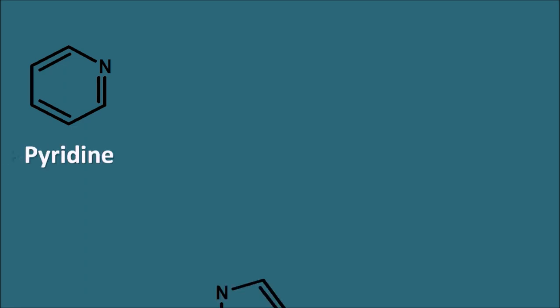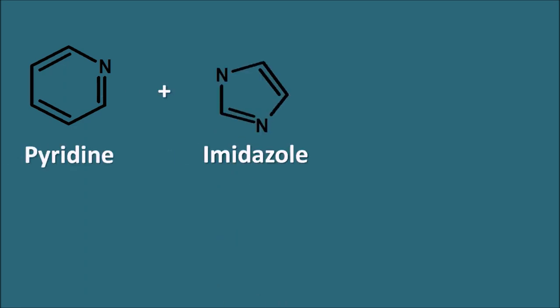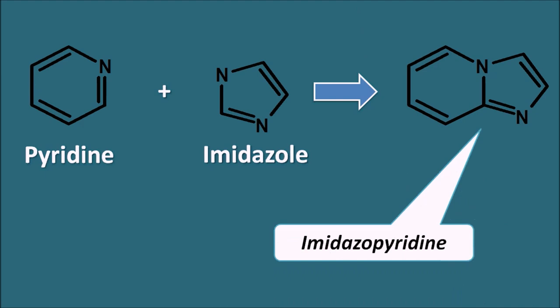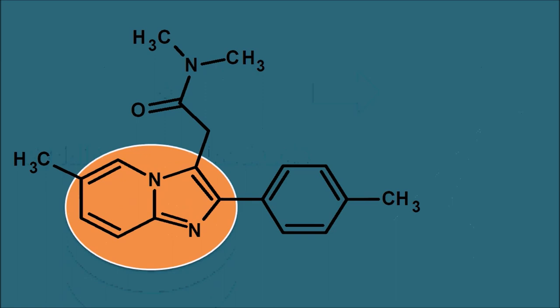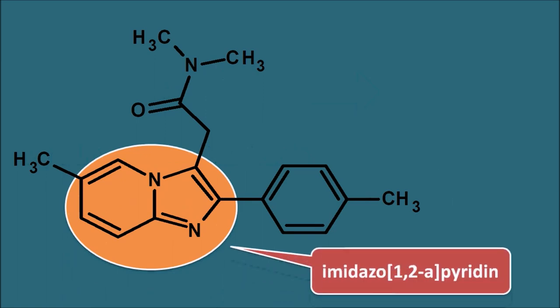Now let us see the structure of Zolpidem. Zolpidem is made up of two ring systems: one is a pyridine ring which is fused with an imidazole ring system. When these two rings are fused, they produce the imidazolopyridine ring system. So Zolpidem does not have the benzodiazepine ring; instead it has the imidazolo[1,2-A]pyridine ring system.